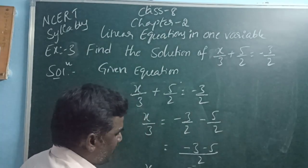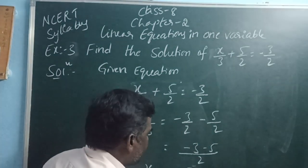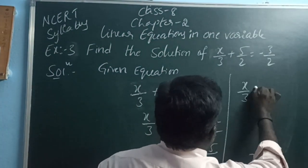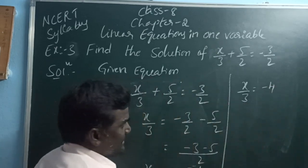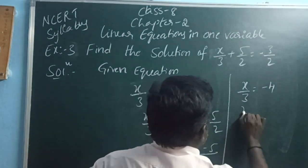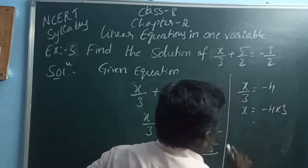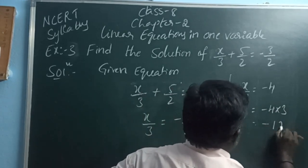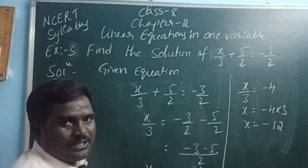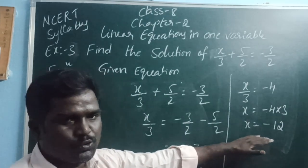So x by 3 is equal to minus 4. Now the 3 is dividing x, so it moves to the right side and becomes multiply. Therefore x is equal to minus 4 into 3. Minus into plus gives minus 12. So the value of variable x is minus 12.